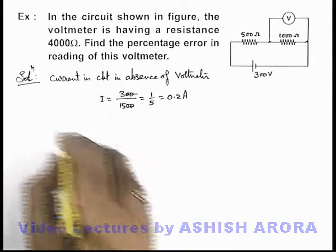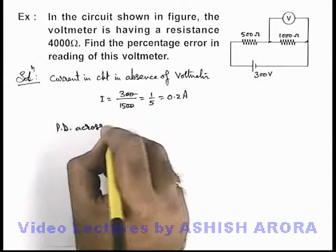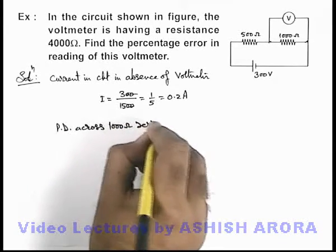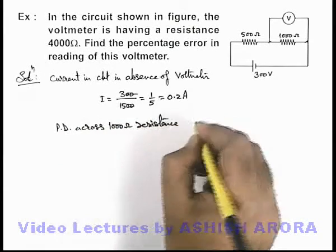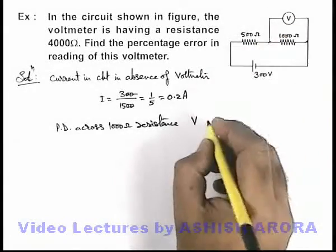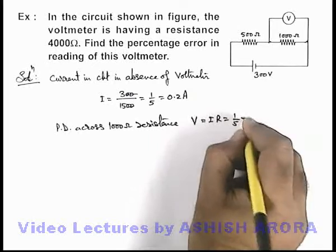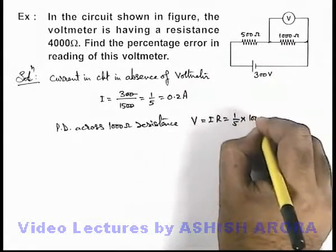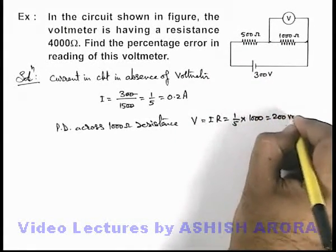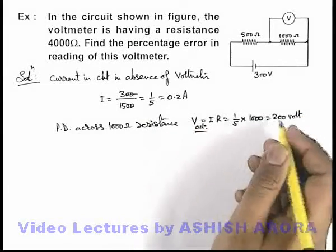With this current, we calculate the potential difference across the 1000 ohm resistance. This potential difference is what we actually want to measure using the voltmeter. It equals I × R = (1/5) × 1000 = 200 volts. This 200 volts is the actual potential difference we wish to measure.